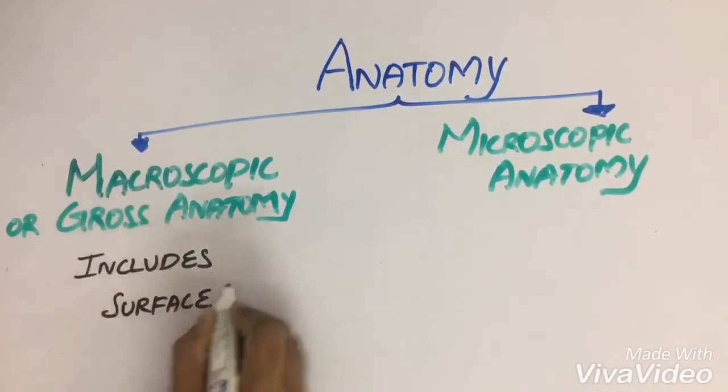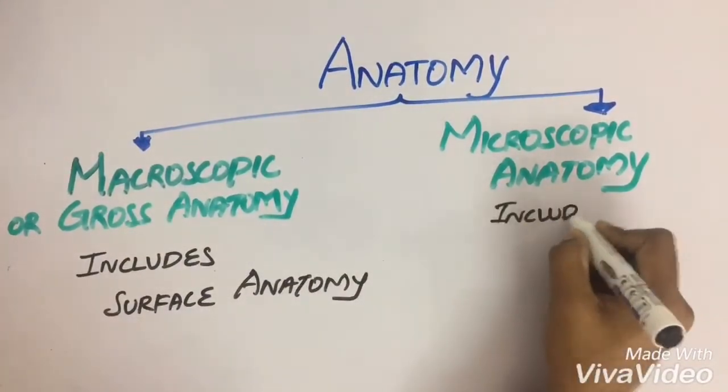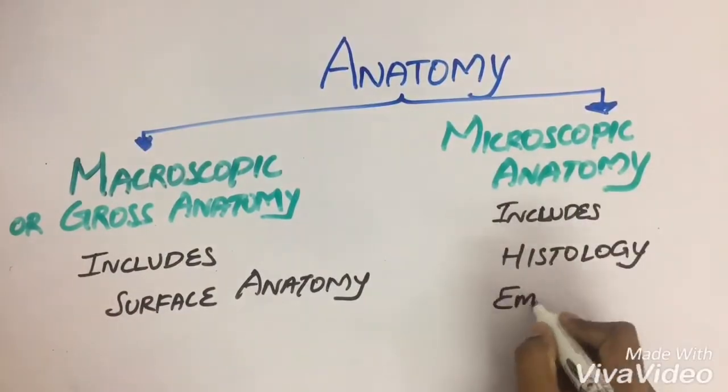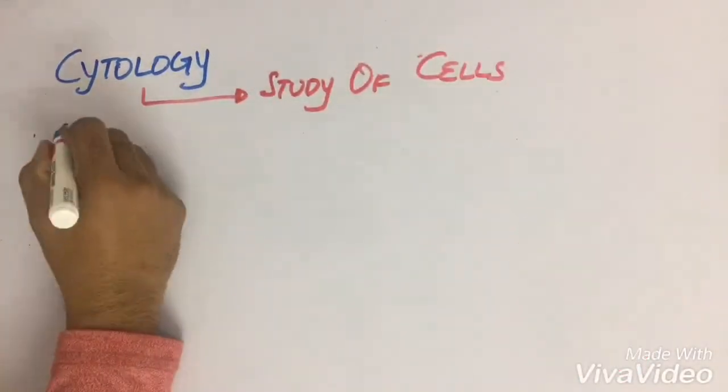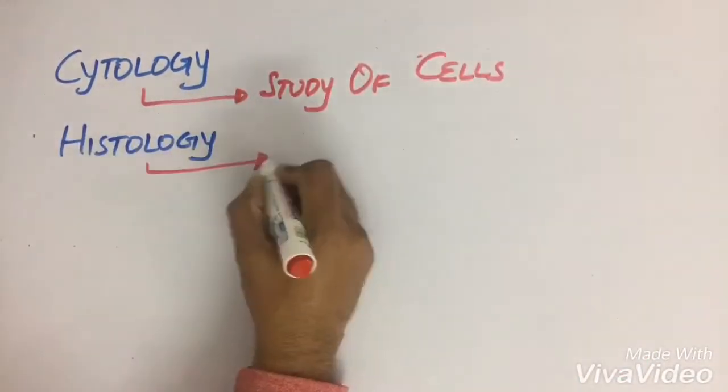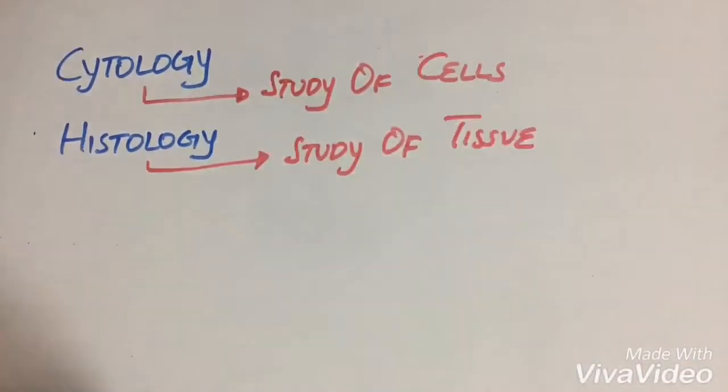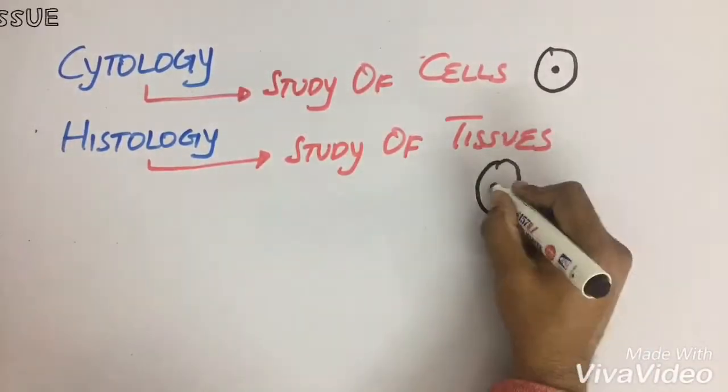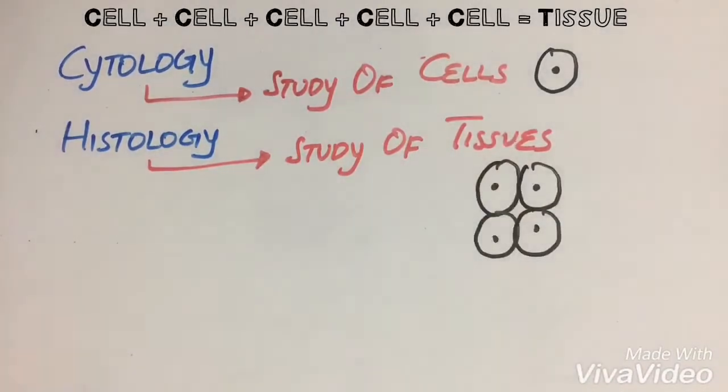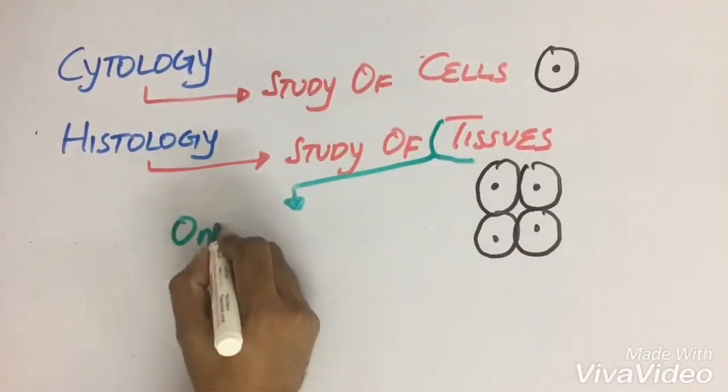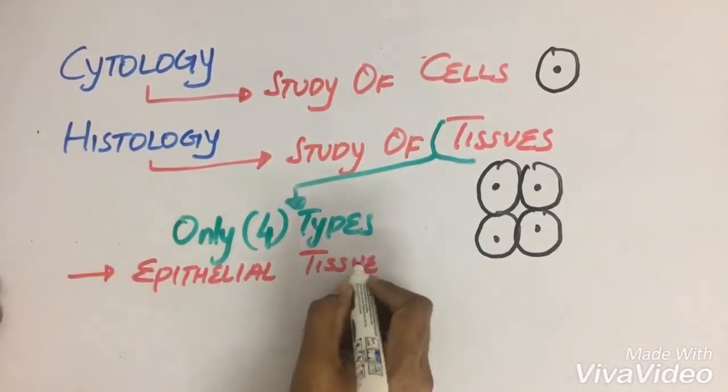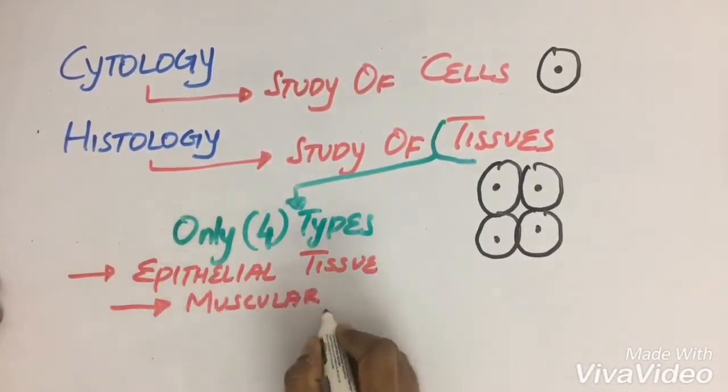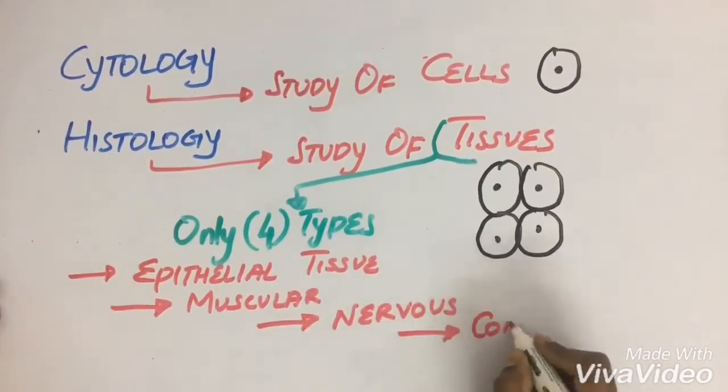Macroscopic anatomy also includes superficial anatomy or surface anatomy, and microscopic anatomy includes histology and embryology. Cytology is the study of cells, whereas histology is the study of tissues. When a group of cells perform the same function it is known as tissue. Tissues are mainly four types: epithelial tissue, muscular tissue, nervous tissue, and connective tissue.